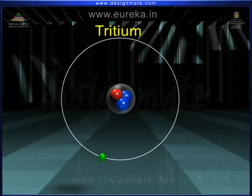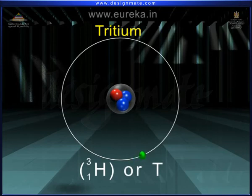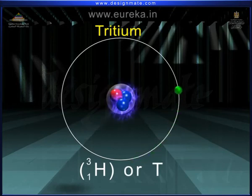Tritium, 1H3 or T. The nucleus of the tritium contains one proton and two neutrons.